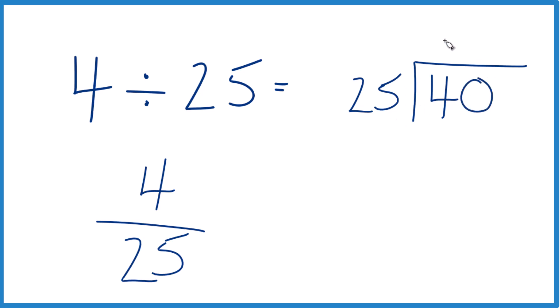But we could call this 40 if we put a 0 and a decimal point up here. So now 1 times 25, that works. Subtract, we get 15.